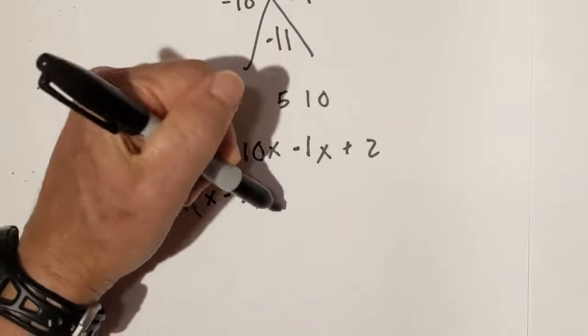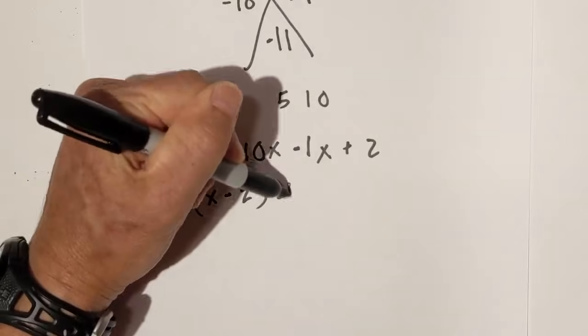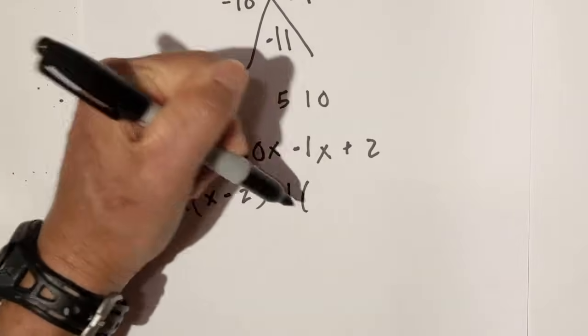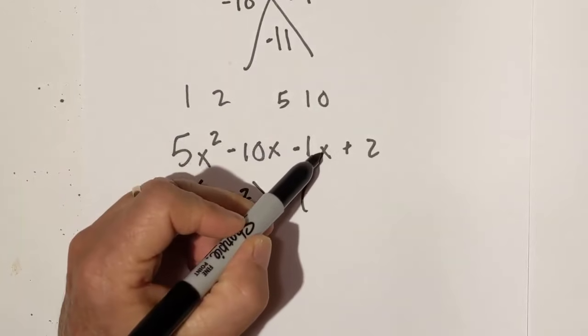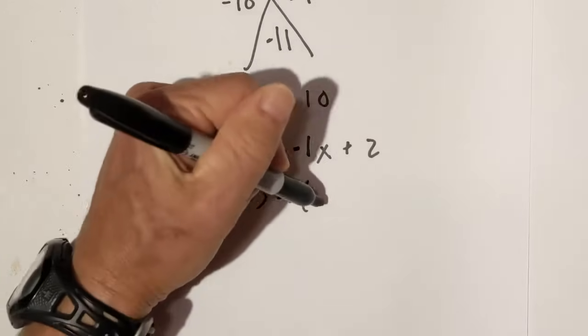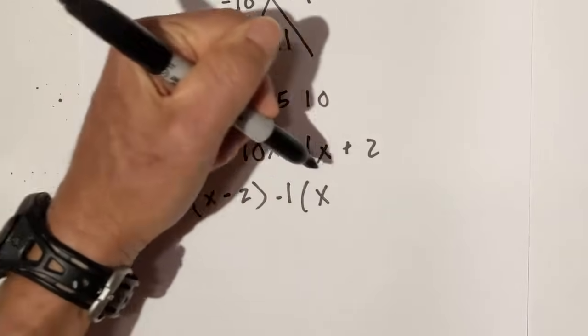And then on this side, it looks like it is negative 1. Remember, whenever you pull out a negative number, you reverse the signs. This is negative x, so I'm going to reverse the sign—that's going to be x. This is positive 2, it's going to be negative 2. Again, remember your signs: whenever you pull out a negative number, reverse the signs.